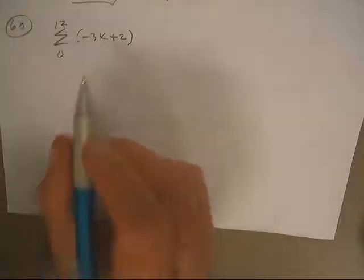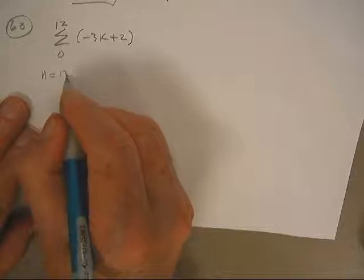Okay, very good. Here we go on this one. Zero to twelve, that's thirteen terms, n is going to be thirteen.